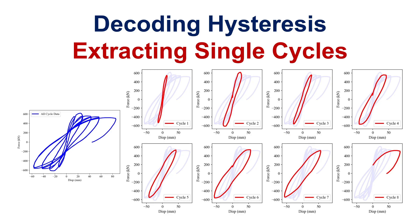When comparing experimental results with analytical models, focusing on single cycles gives a more detailed validation and calibration process. Engineers can assess how well the analytical model replicates the observed behavior during individual loading cycles, which helps in improving the accuracy of the analytical model.